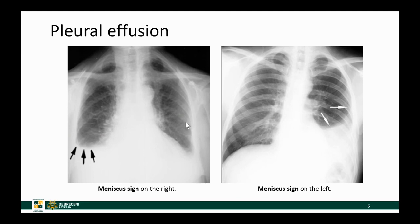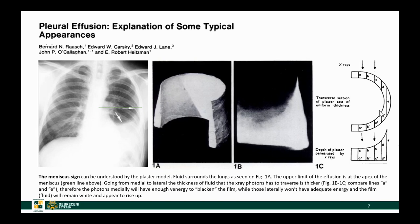We normally see the meniscus sign, either on the right or the left, if we have more fluid than just enough to fill the subpulmonary region. The meniscus sign can be understood by the so-called plaster model: imagine you fill the pleural cavity with plaster or cement. Because the pleural cavity surrounds the lung, the plaster — representing fluid — would reach a certain height, representing the apex of the meniscus. On the chest X-ray, this appears as a meniscus line.